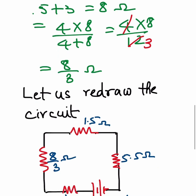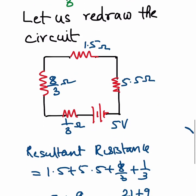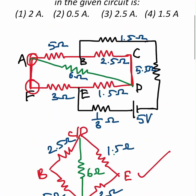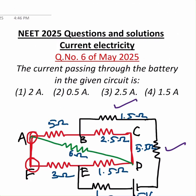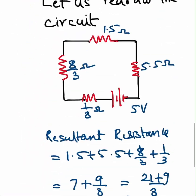Then after taking the 8 by 3 in series with 1.5, 5.5, and 1/3, again we will calculate because they all become in series and add all of them. Because they are all in series, once you add all of them, you will get the final resistance as 10 ohms.